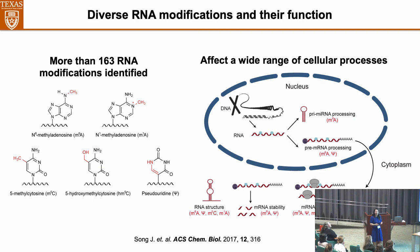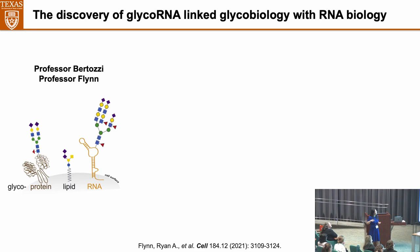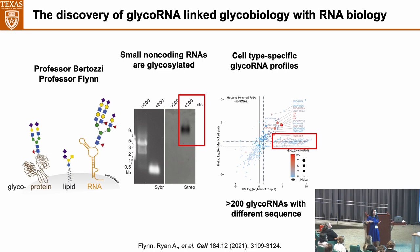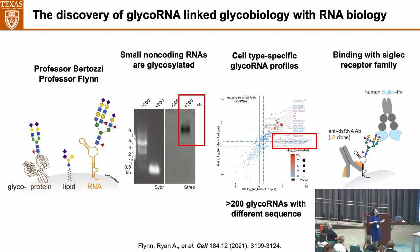We know that RNA are very important biomolecules, and there are more than 100 RNA modifications that have been identified. These RNA modifications can affect many cellular processes, including RNA structure and RNA stability. In 2021, Professor Bertozzi and Professor Flynn, for the first time, discovered a new type of RNA modification called glycoRNA. They identified that glycoRNA are present on the cell surface, similar to glycoprotein and glycolipid. They also found that glycoRNA are small non-coding RNAs, and discovered more than 200 glycoRNA with different sequences. GlycoRNA can interact with Siglec receptors, indicating some potential function.